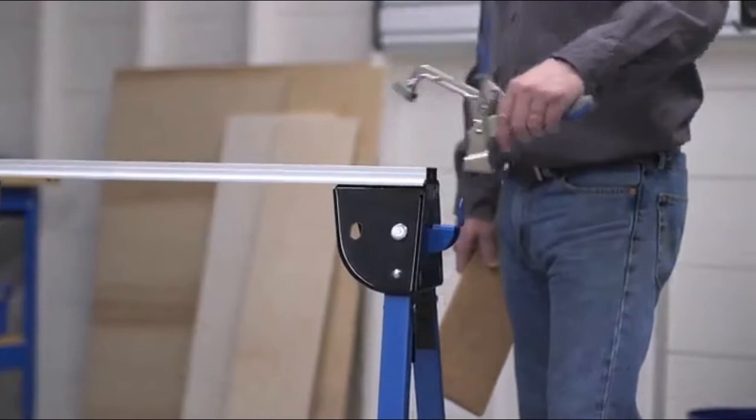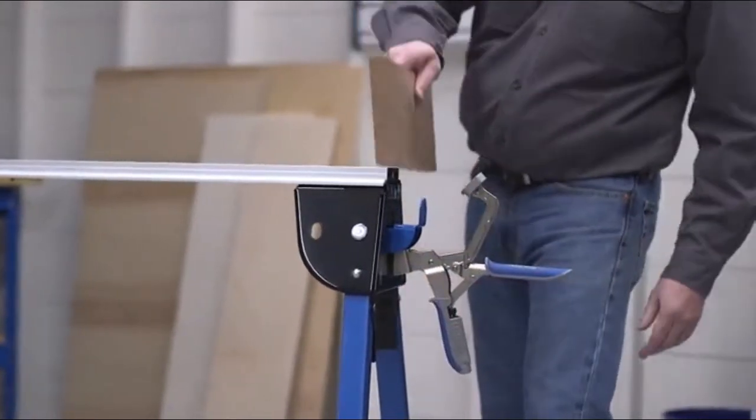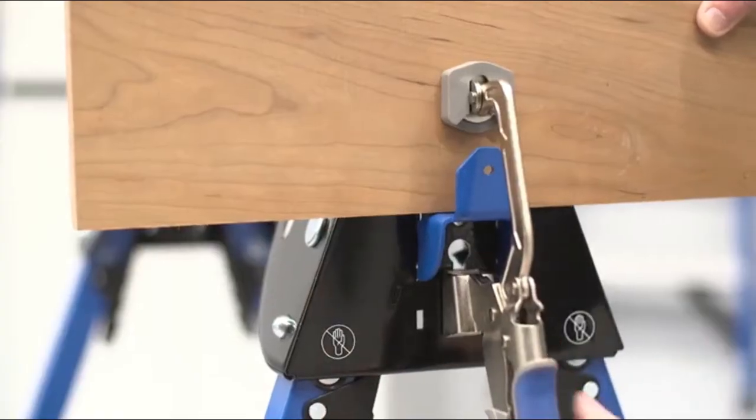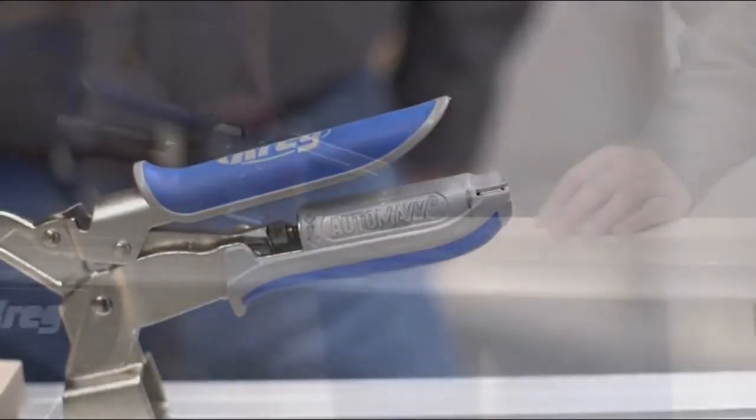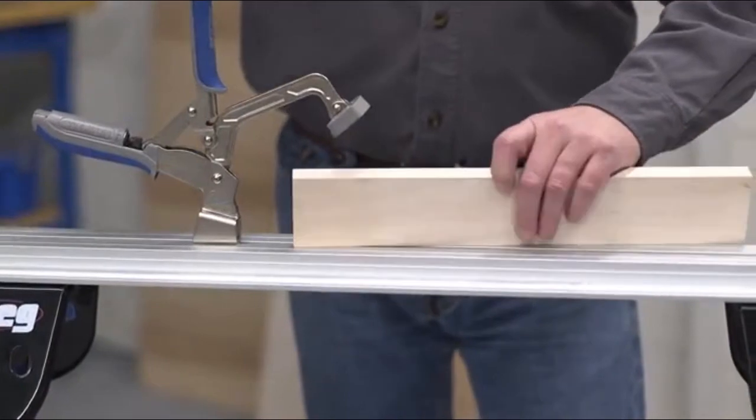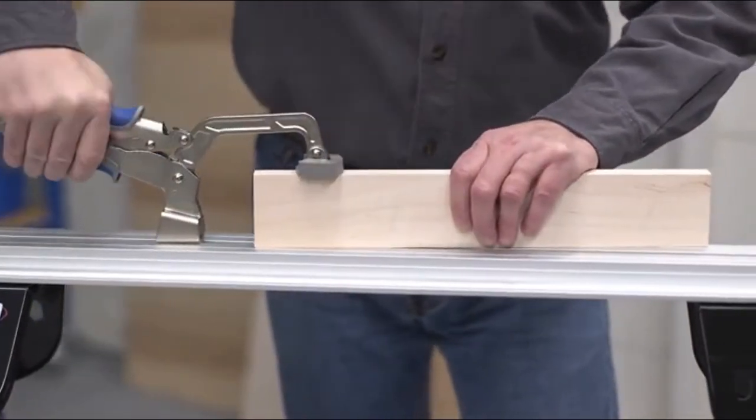With the included Kreg Bench Clamp, you can hold items in place in the long track or place the clamp in either end of the Trackhorse for secure, vice-style clamping. And thanks to Kreg's AutoMax auto-adjusting technology, you never have to re-adjust the clamp when you move from one material thickness to another.